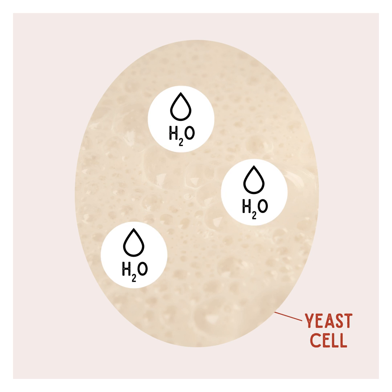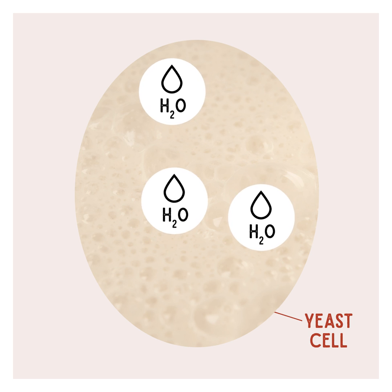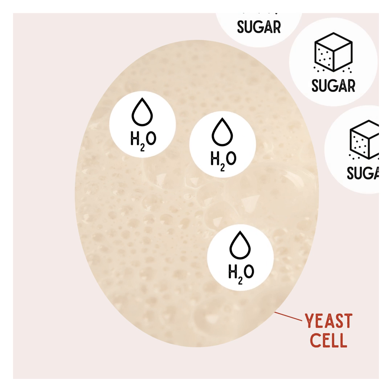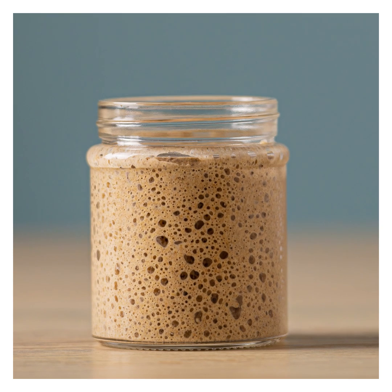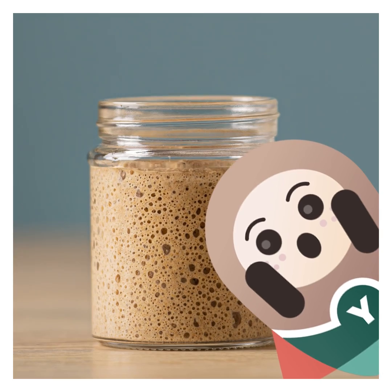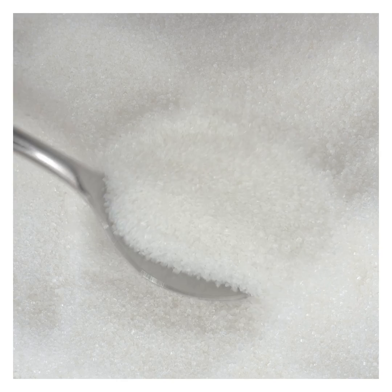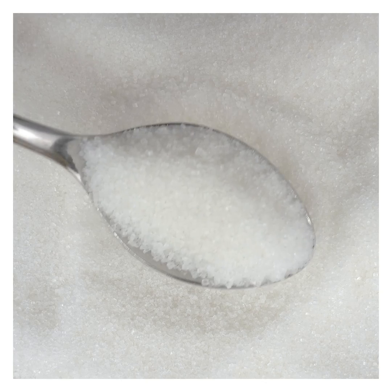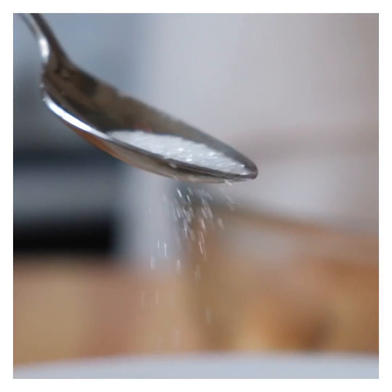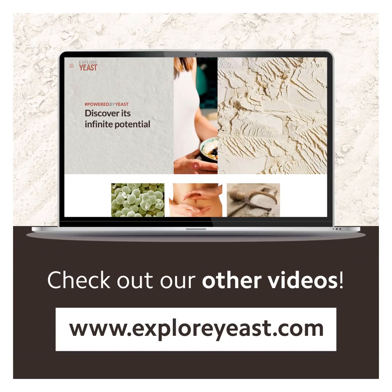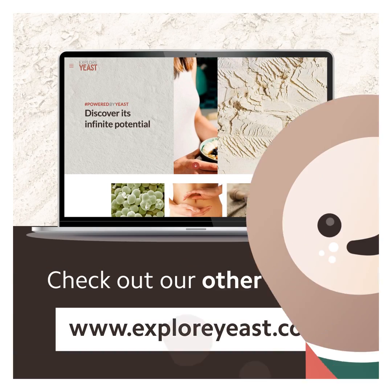Sugar is hygroscopic, which means that it will absorb the moisture around it. When you add too much sugar, it will result in the yeast cells drying out and the whole fermentation process will be slowed down and may even stop completely. So remember, the right amount of sugar will make yeast grow and speed up fermentation, but too much and it might even hurt the yeast.